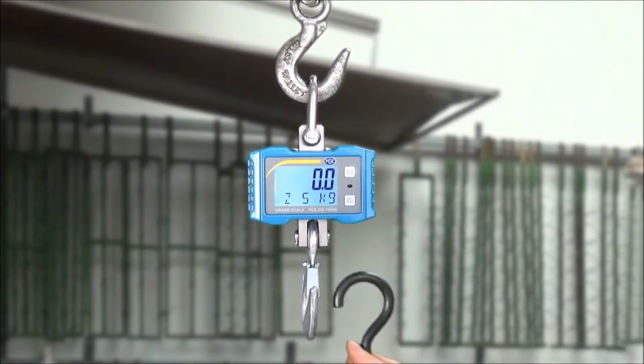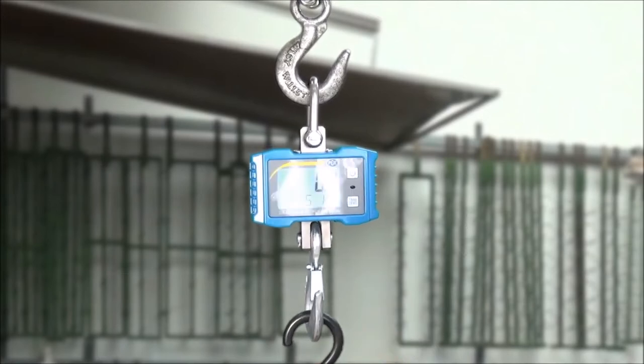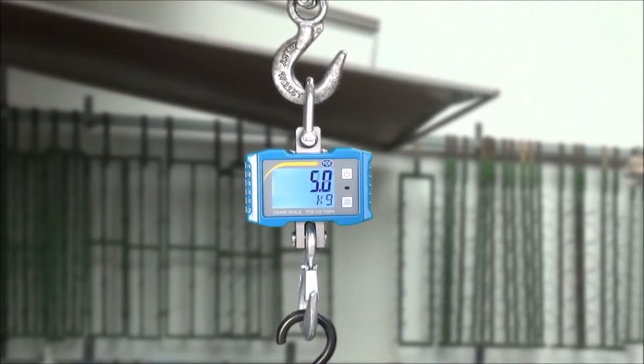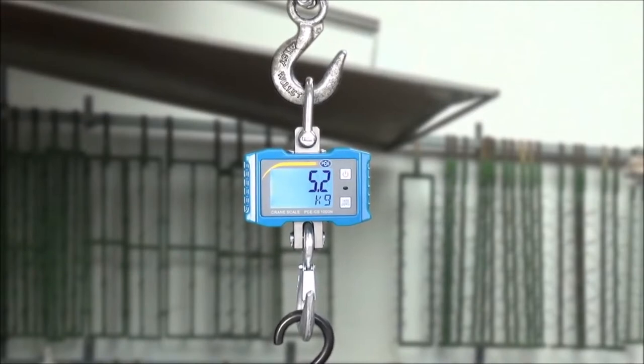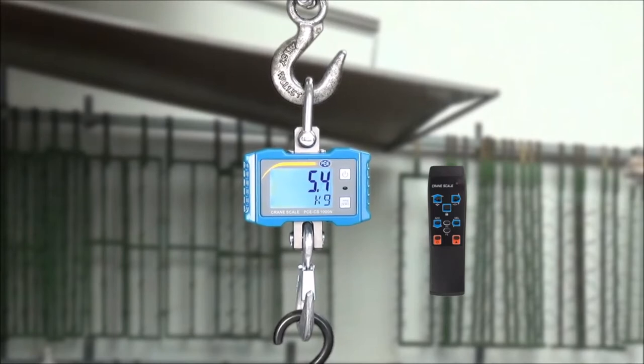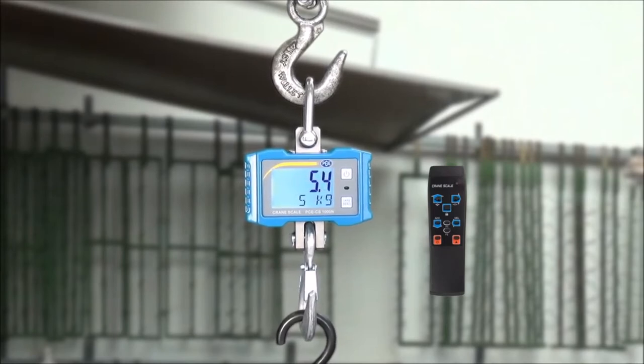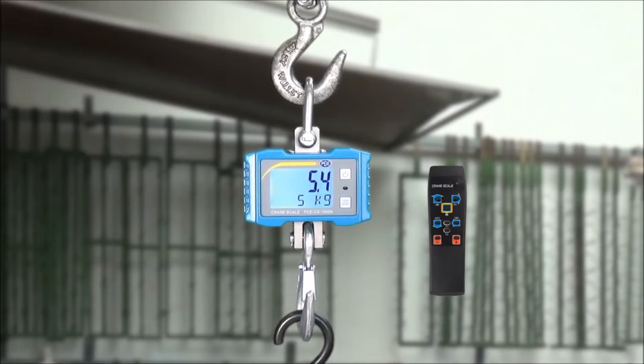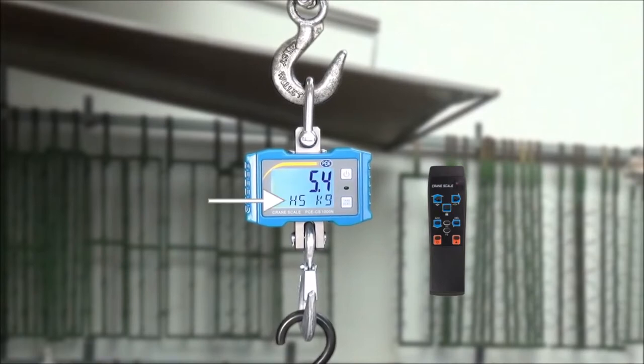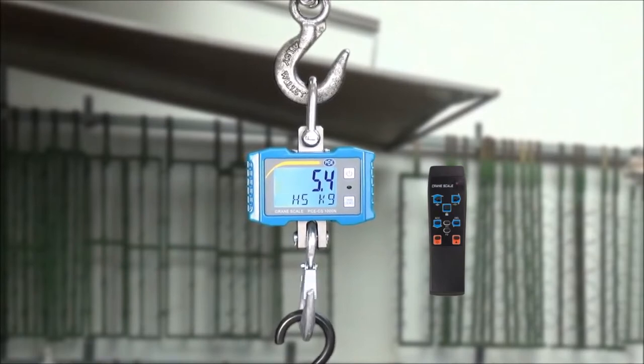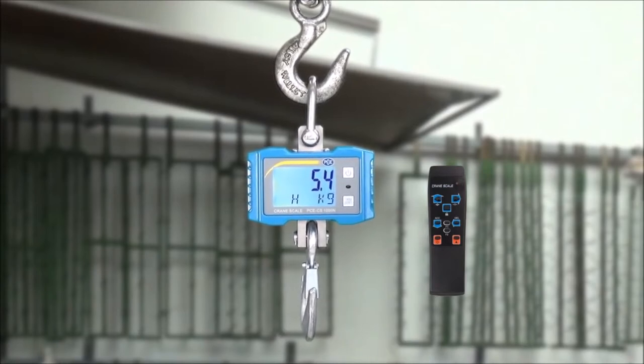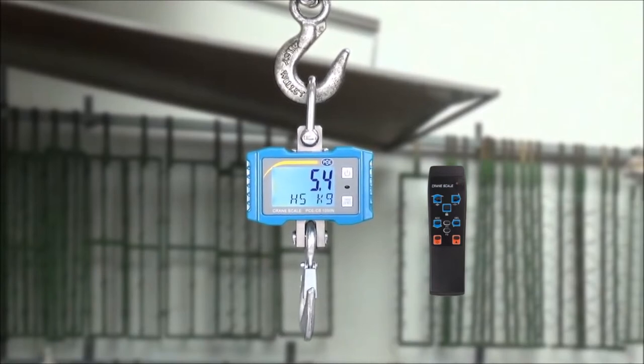The crane scale also holds a hold function. Means that when I have a weight, I load. I can using the remote control freeze it in the display. For this there is a button on the remote control where a lock is on it. When I press this hold button in the display, a H is shown. And when I now take the load from the hook, the load stays still until I have made a note of it. By repeating the pressing of the hold button, makes the way normal again.